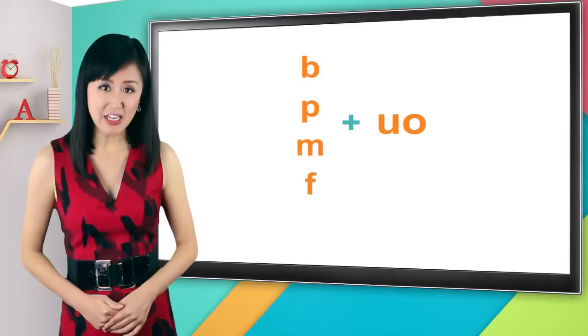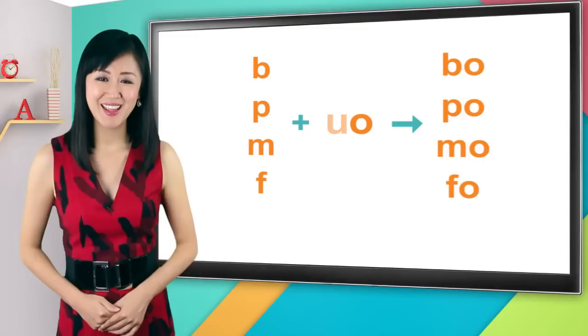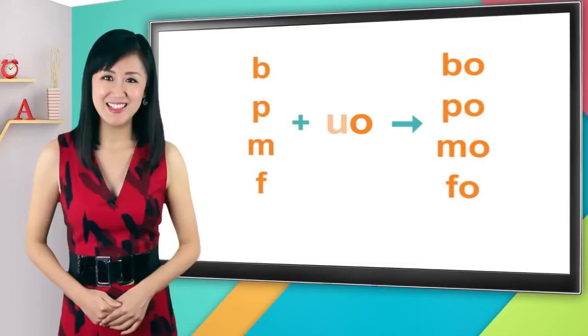Also as we learned before, when u-o follows b, p, m and f, these four initials, you should know that wu is dropped, so the spelling becomes b-o, p-o, m-o and f-o. When you see these four pinyin, you should automatically know that you gotta put a wu in the middle, alright?